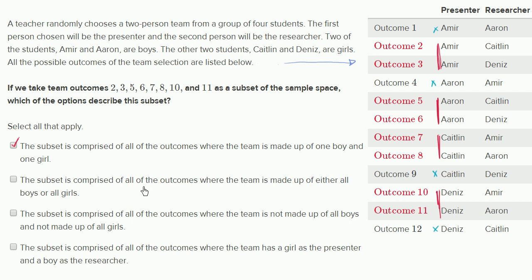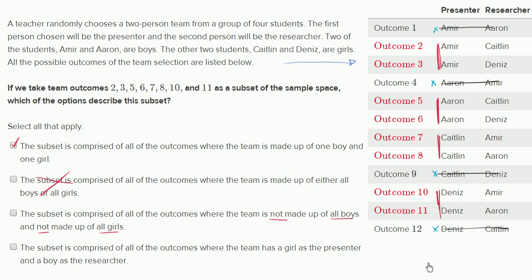The next option says the subset is comprised of all the outcomes where the team is made up of either all boys or all girls. No — every scenario in this subset is one boy and one girl, so we can rule that out. The following option says the subset is comprised of all the outcomes where the team is not made up of all boys and not made up of all girls. That's correct — if you rule out the all-boys outcomes and rule out the all-girls outcomes, the subset is everything left over. So we check that one as well.